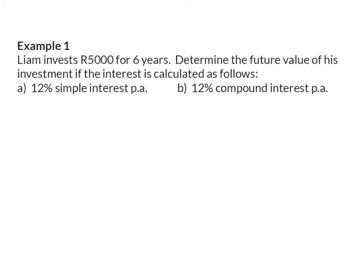Let's start off with a basic example. Liam invests 5,000 rand for six years. Determine the future value of his investment if the interest is calculated as follows. And then we have to do it for 12% simple interest per annum as well as 12% compound interest per annum. When you are doing a financial maths question, it helps to highlight the important parts of information that was given.